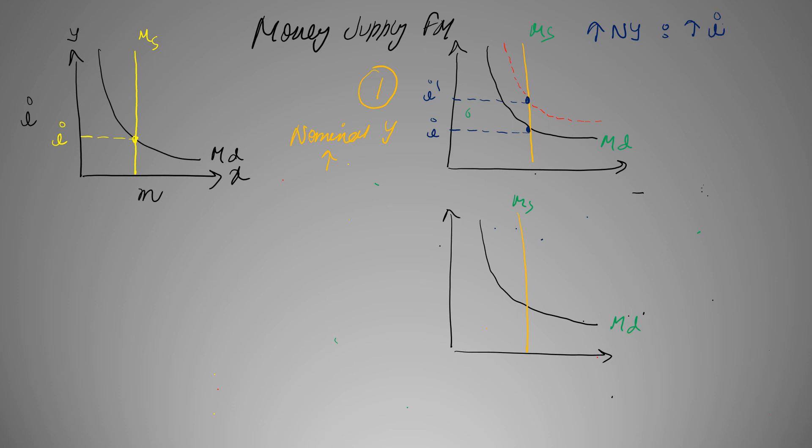Now, in the second case, we will assume money supply by central bank increased. Increase in money supply basically means rightward shift in this vertical line. So again, it's visible that earlier this was an intersection point, but now due to the rightward shift of MS, the interest rate fell. So, increase in money supply leads to decrease in interest.